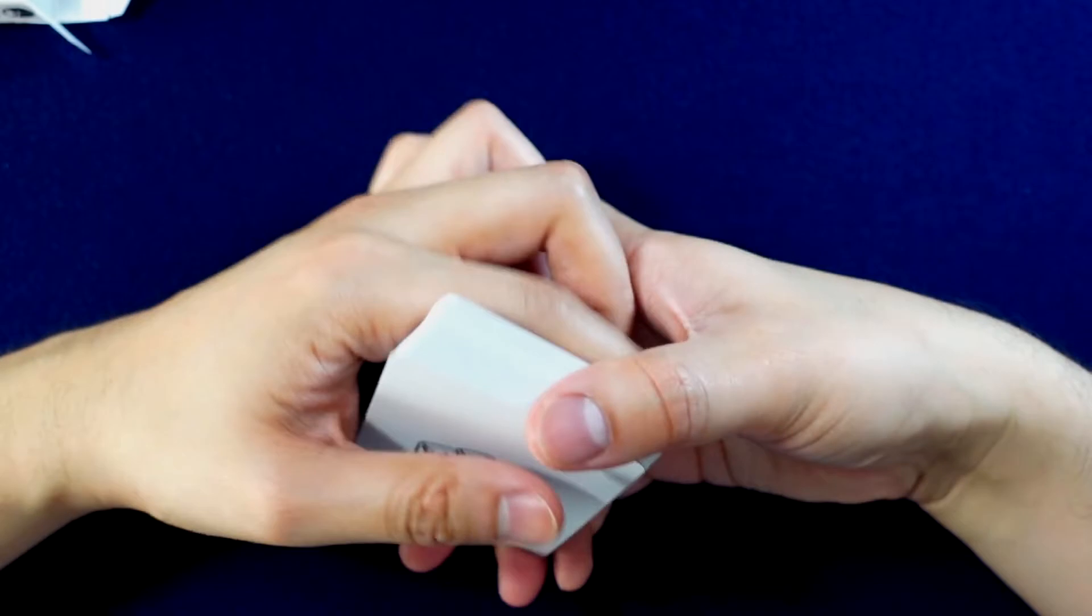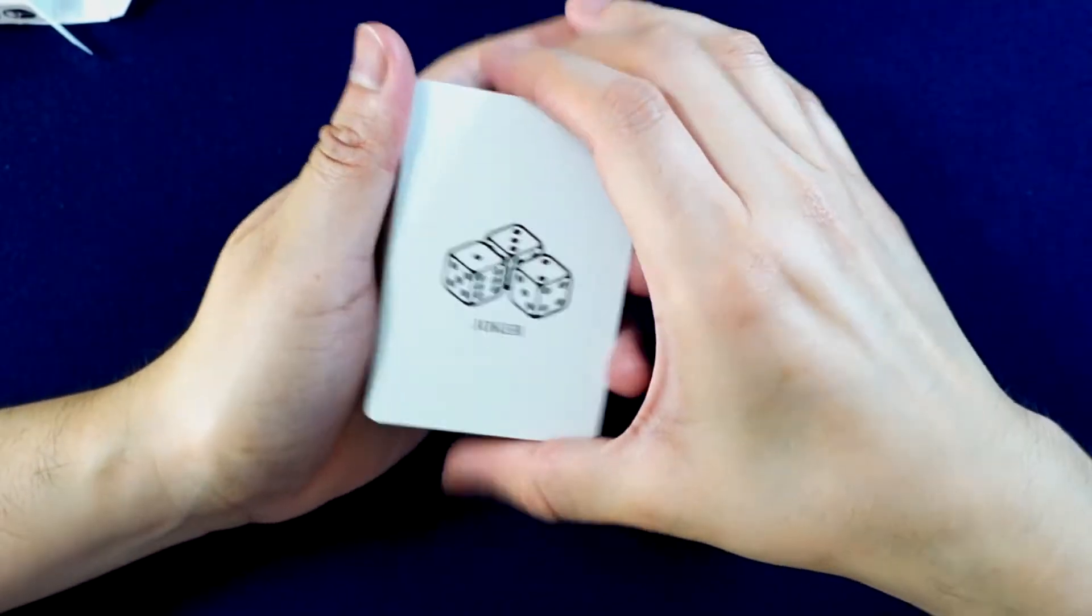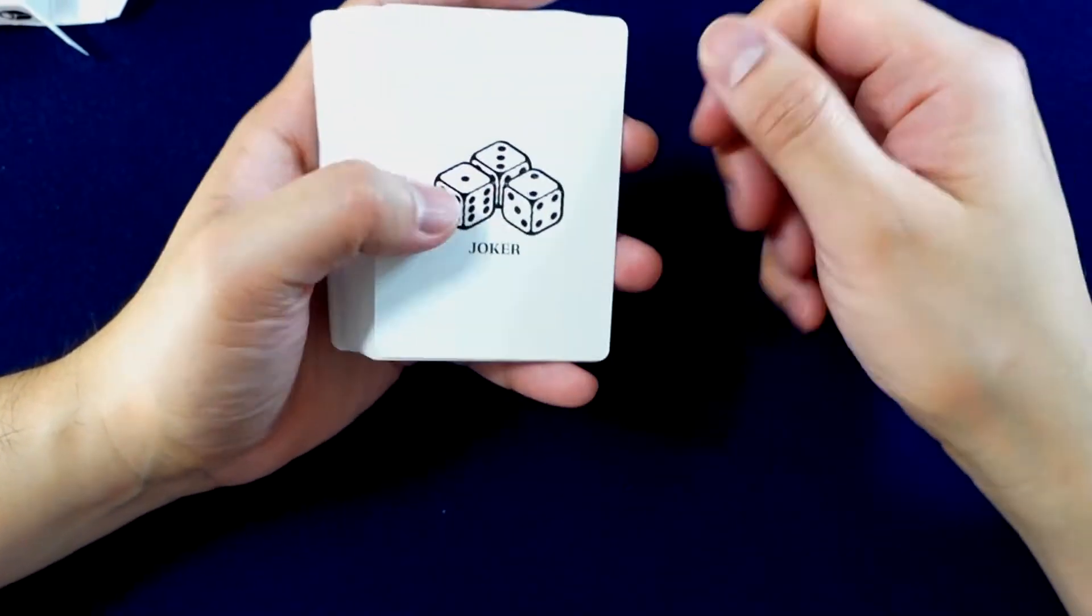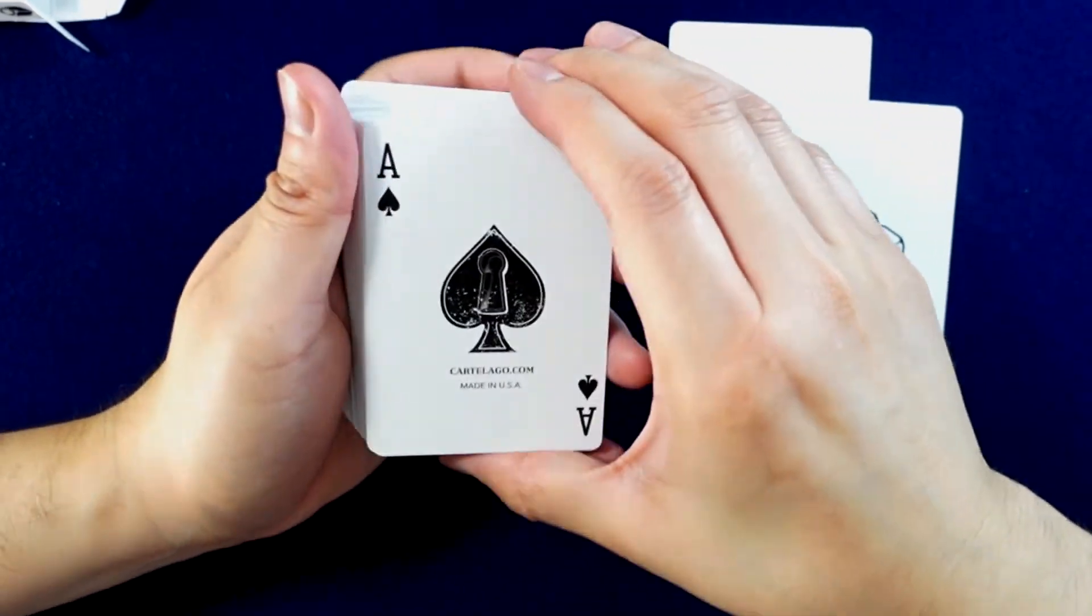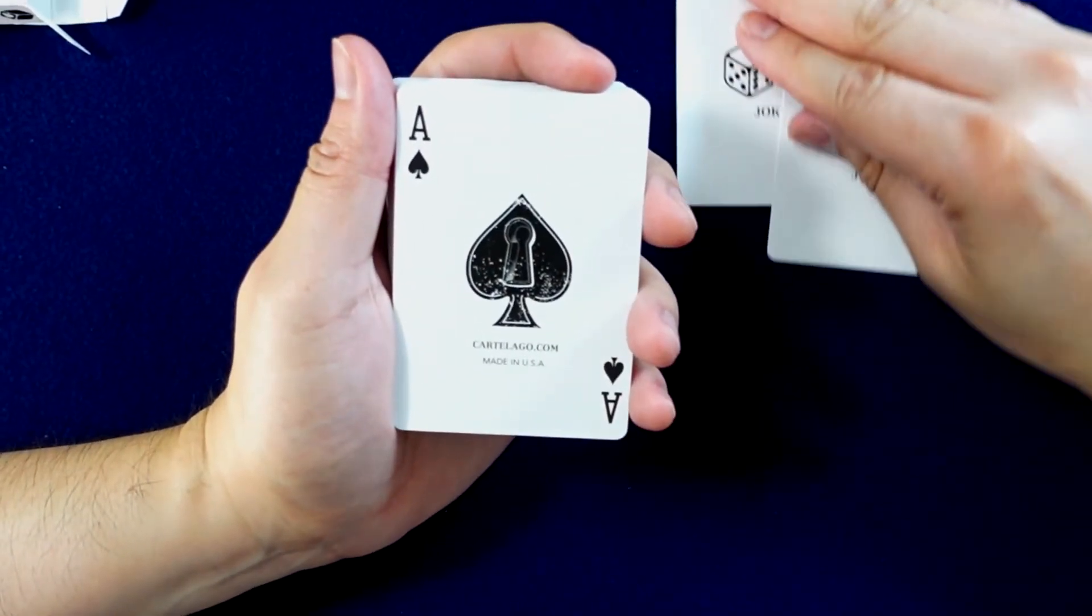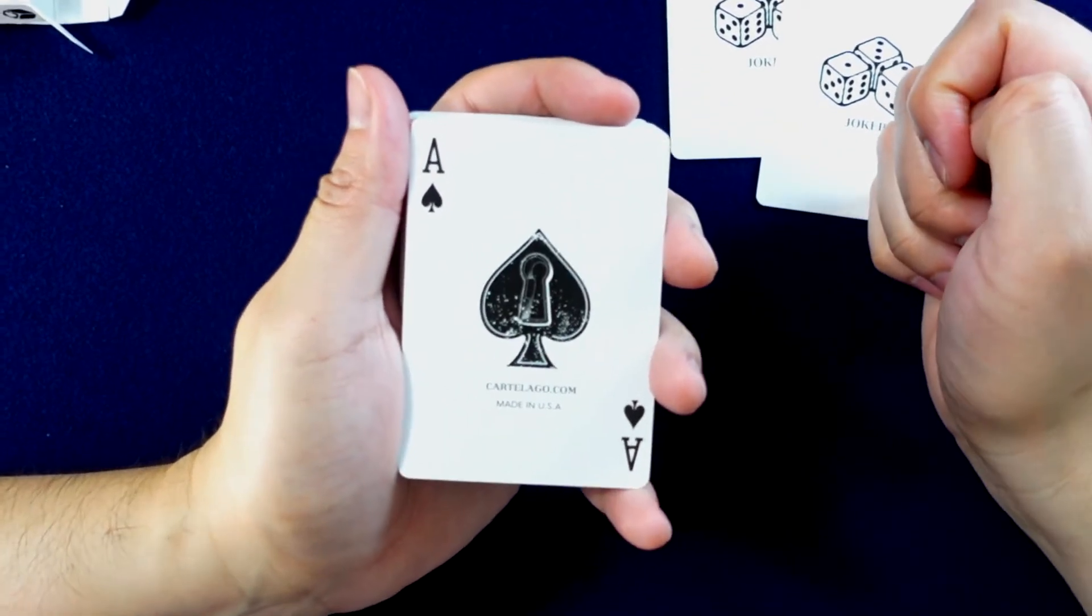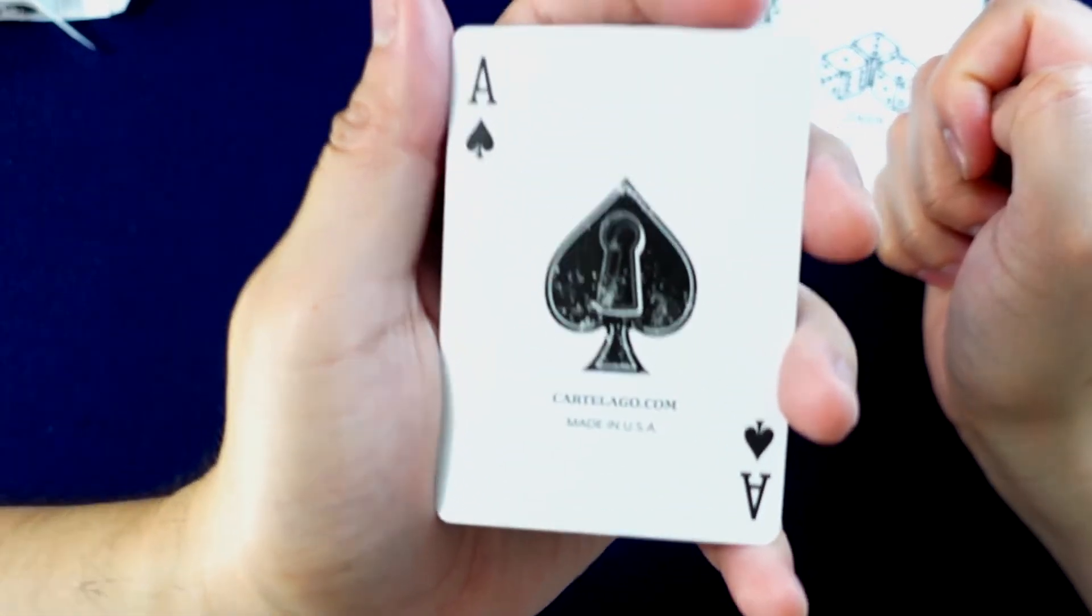All right. There we go. Joker. Dice on them. That's the other Joker. The Ace of Spades with the keyhole. It says Cardiolago on it.